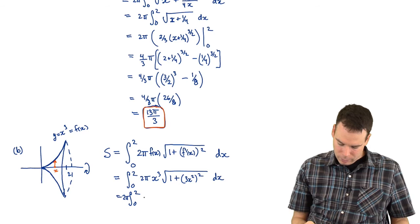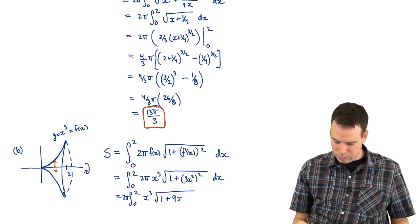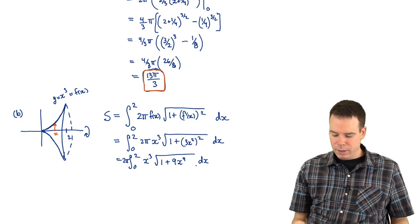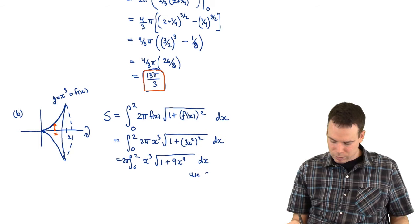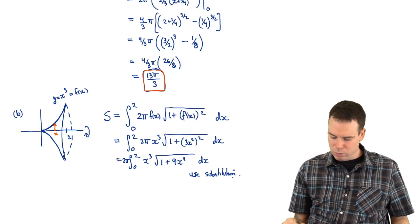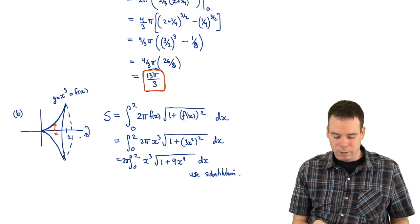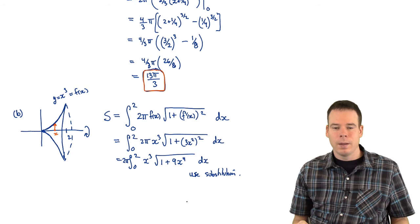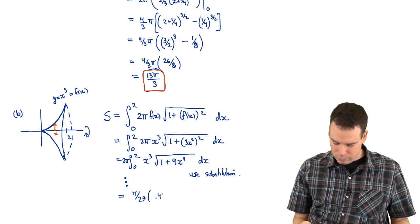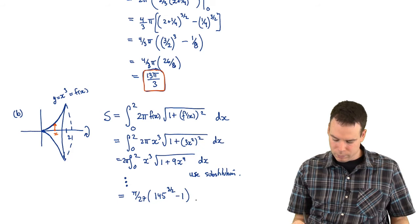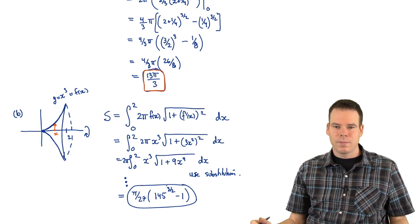We can see that what's under the square root has a derivative proportional to the x³ sitting out front, so substitution will work here. The new step was finding the integral that represents the surface area; now it's an exercise in integration. I'll leave the details for you to fill in. The result is π/27 times (145 to the power of 3/2, minus 1). That's our end result for Example 2.